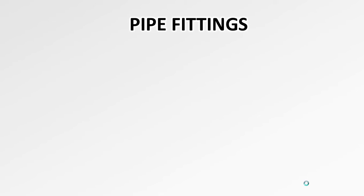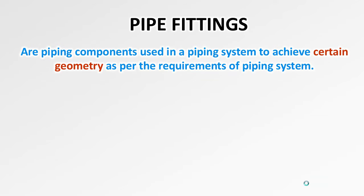Let's understand what pipe fittings are. Pipe fittings are piping components in a piping system used to achieve certain geometry as per the requirements of the piping system. When we say certain geometry, it is a specific requirement based on the location, the process, or the system that has been built.